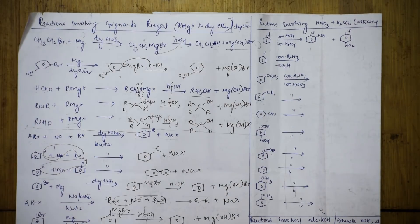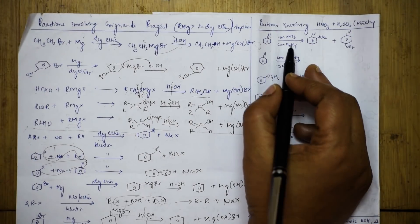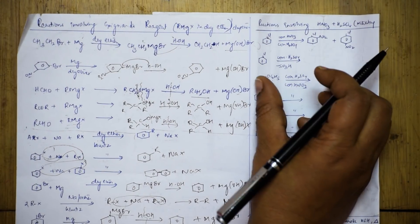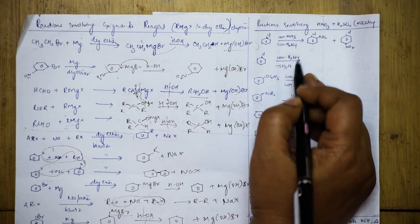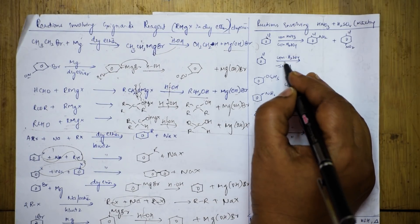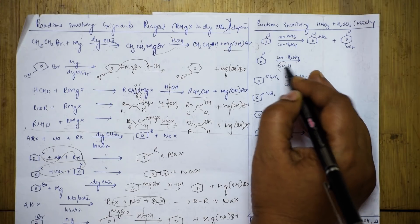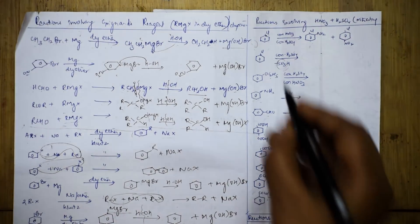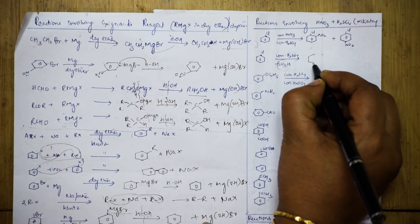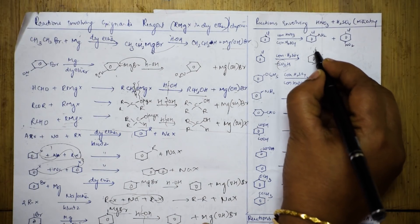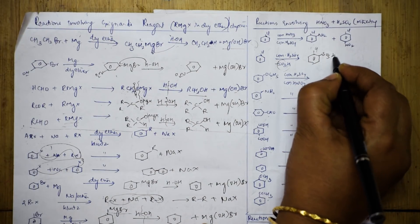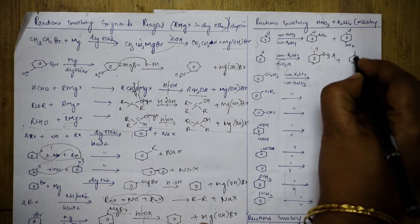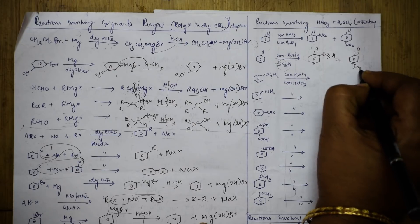My concept is clear - nitrating mixture will add NO₂ at ortho and para. Now, if you have sulfuric acid only, the electrophile is SO₃H. I should add one at ortho position and one at para position. So for chlorobenzene with H₂SO₄ - electrophilic substitution SO₃H at ortho position and at the para position.